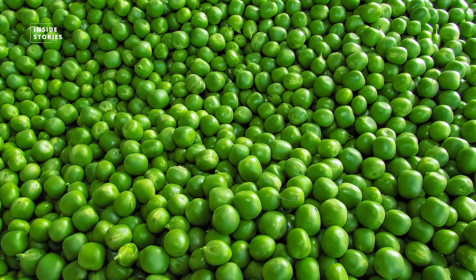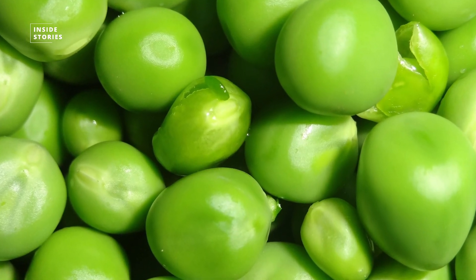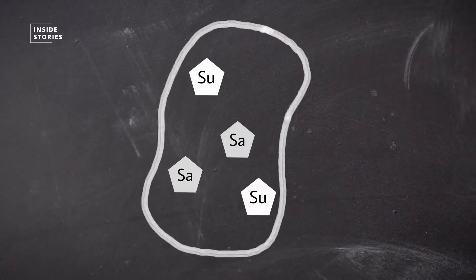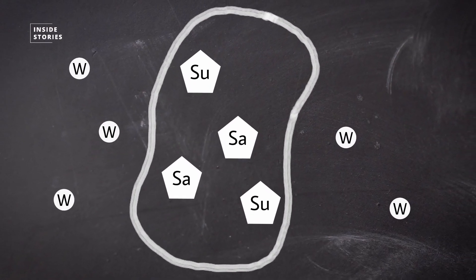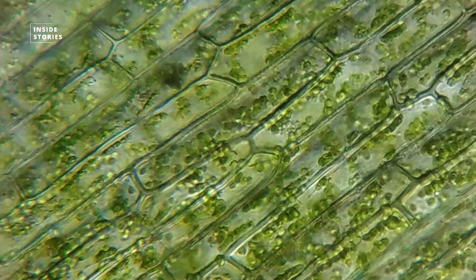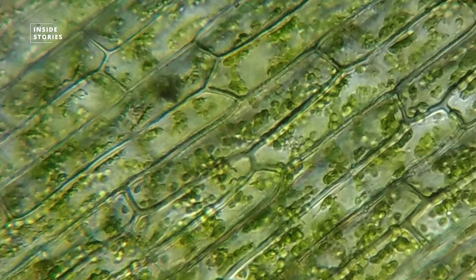To better understand what is going on, we need to take a look inside the peas' cells, where you can find sugar and salt, which both attract water. The water gets into the cell through the cell membrane, which plays a key role here.